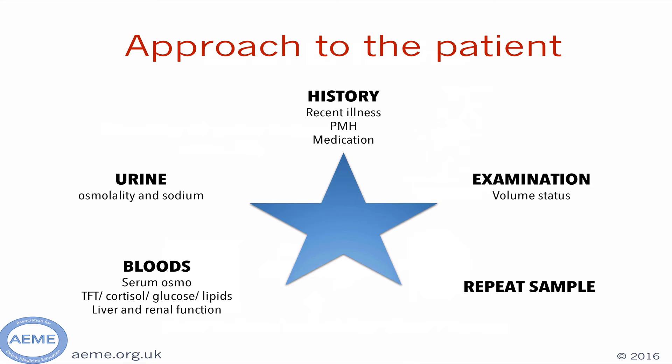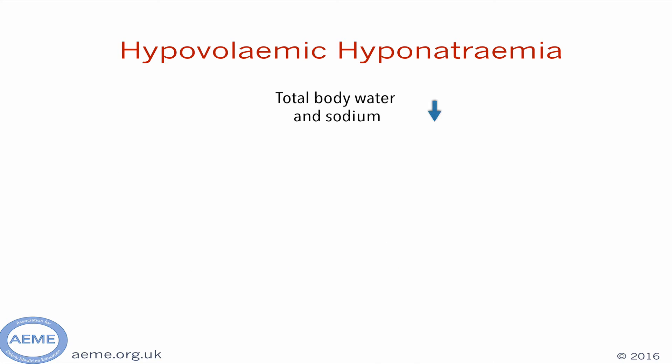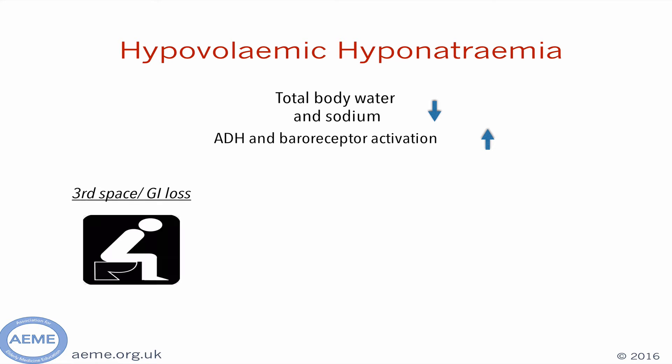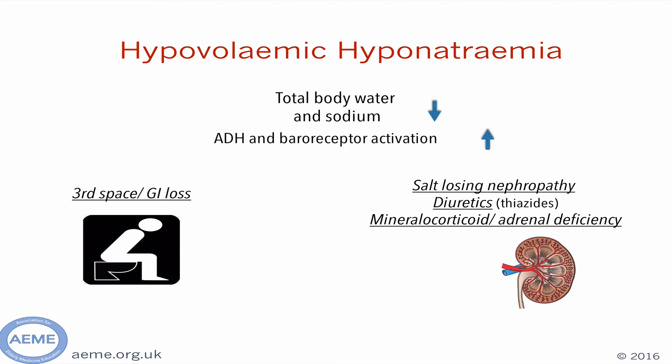We're going to think simply about the three main forms of hyponatremia. The first is hypovolemic hyponatremia. Here, the total body water and sodium are reduced, so antidiuretic hormone acts on the kidneys to retain water. The causes include gastrointestinal losses, third space losses, burns, diuretics, and salt-wasting disorders, where fluid and sodium are lost. These patients often need replacement of fluid with 0.9% saline, the rate and volume of which will depend on the clinical picture.